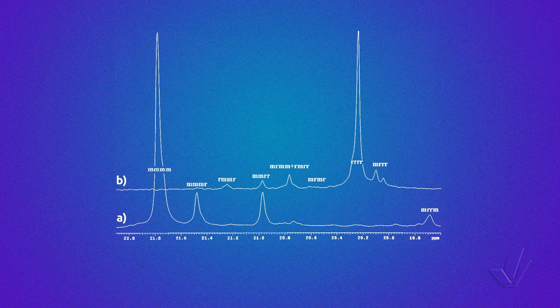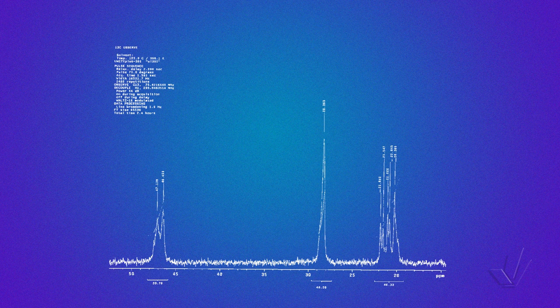Even though the regions of each sequence in polypropylene have been published, it is not always easy to delimit these areas because the chemical shift can vary with the solvent, the reference, or other conditions used in the analysis. Sometimes it is easier to take typical spectra as examples to define the areas. Here there are two examples of polypropylene spectra: in A there is an isotactic polypropylene and in B a syndiotactic. As an example, here we have a spectrum of an atactic polypropylene taken in a 300 MHz equipment.